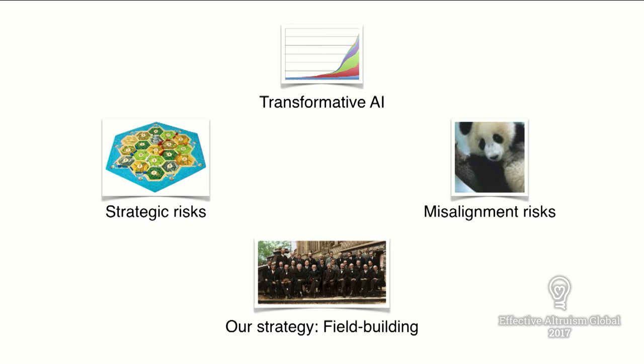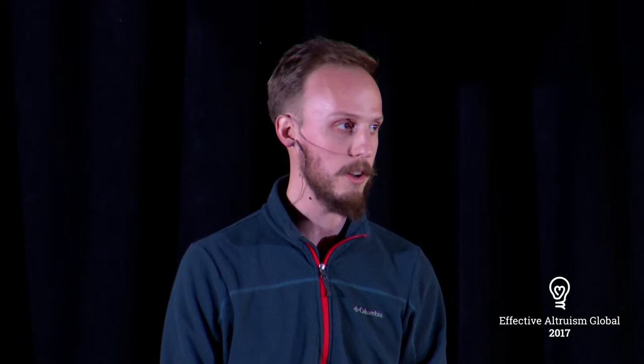There are four basic concepts that I want to really drive home during the course of this talk. There are a lot of different ways to frame potential risks from advanced AI, and it can be hard to understand why we're doing the things we're doing without understanding how we're thinking about it. The four concepts are: transformative AI, two categories of risks — strategic risks and misalignment risks — and our strategy, which is field building.